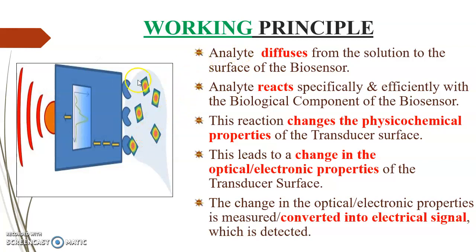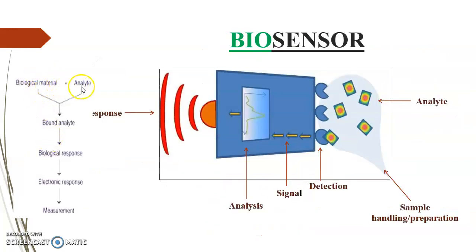This is how it works: the analyte diffuses from the solution to the surface of the biosensor. The analyte and the biosensor react specifically and efficiently so that there is a change in physico-chemical properties of the transducer's surface. This creates a change in optical or electronic properties, which is converted into an electrical signal that can be detected. The bio-material combines with the analyte to form a bound analyte, which creates a biological response, converted into an electronic response that can be measured.